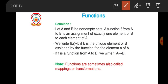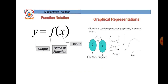We denote the mapping as f: A → B — this is the mapping of set A to set B. In graphical form, you can visualize the function mathematically as y = f(x), where y is the output, f is the function name, and x is the input.